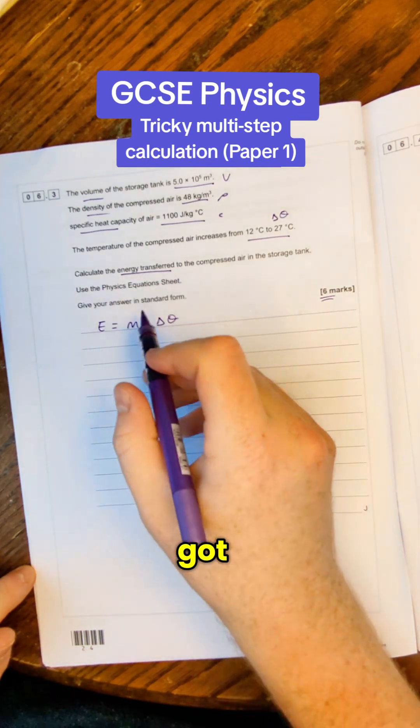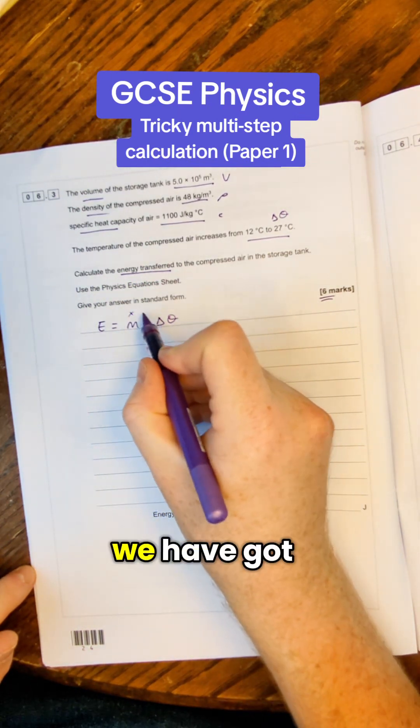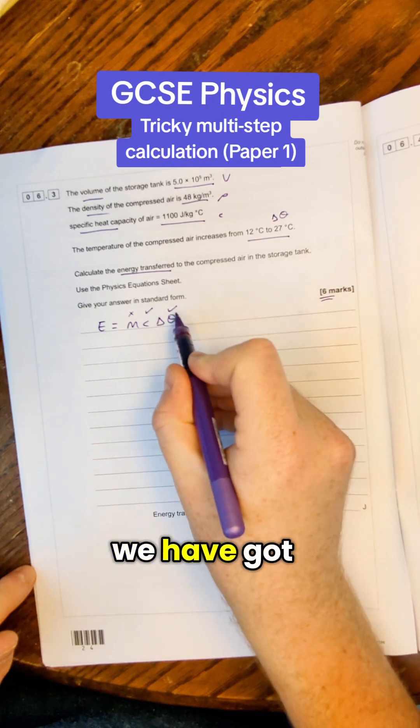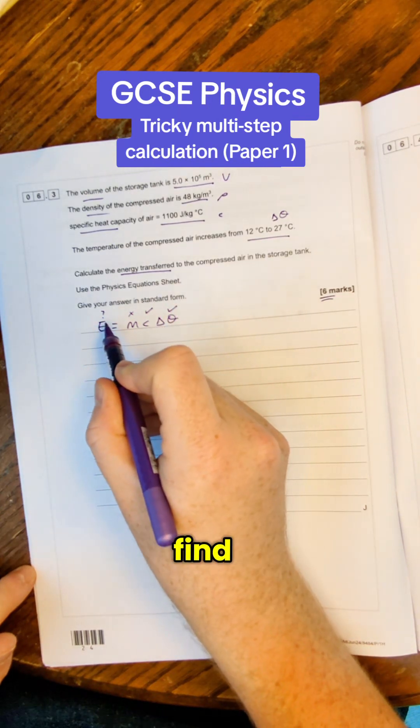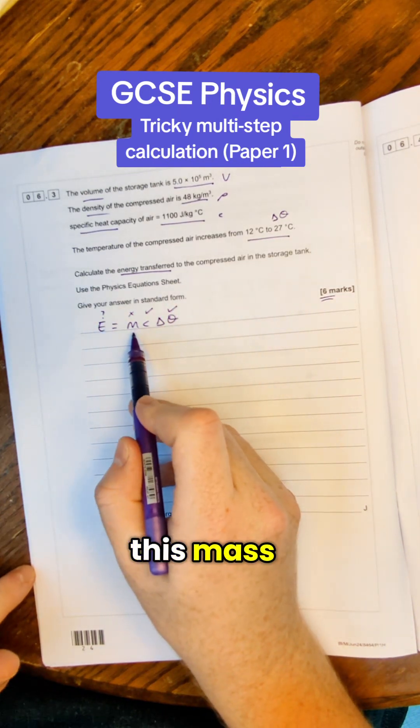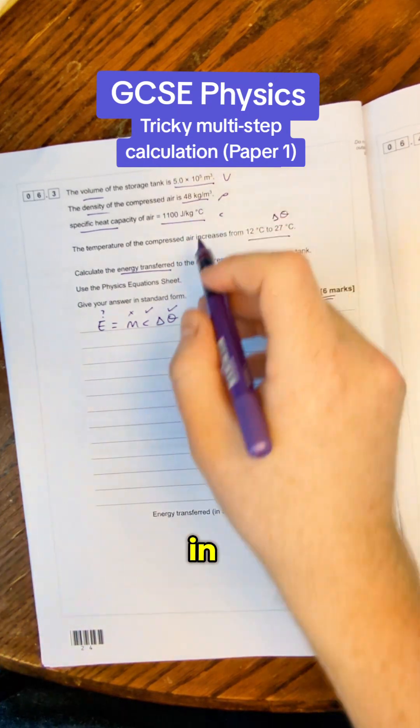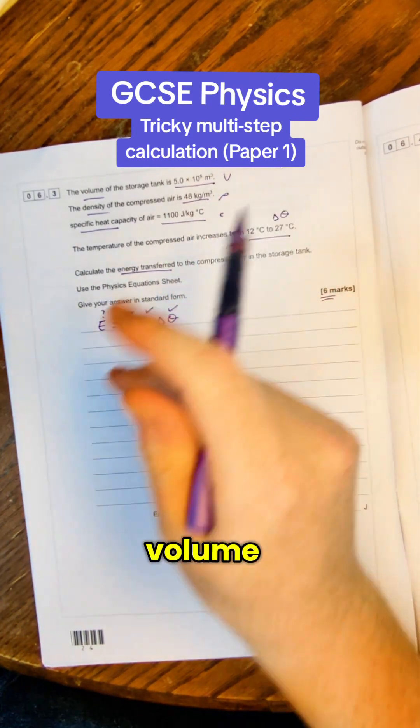Next we can have a look at what we've got. We've not been given the mass, we have got specific heat capacity, we have got change in temperature and that's what we're trying to find. So how do we find out this mass? Well that's where these other numbers come in. We've got density and we've got volume.